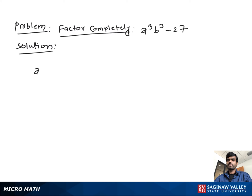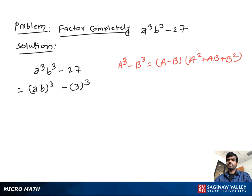Factor completely a³b³ minus 27. If we see it, both look like perfect cubes, so we can write (ab)³ minus 3³. Now if you see, it looks like a special case of the a³ minus b³ form. We know a³ minus b³ is equal to (a minus b)(a² plus ab plus b²).